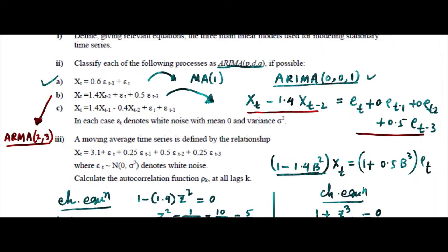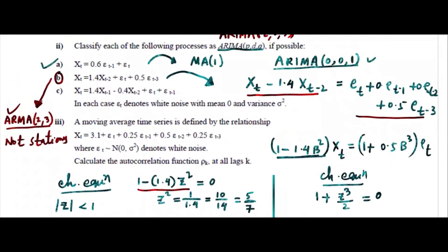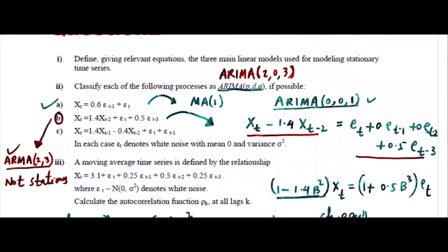My question is: can you write this as ARIMA(2,0,3)? We already checked there is no unit root here, so there is no D component — D is 0. So you can write it as ARIMA(2,0,3), meaning AR2 process, integrated order 0, MA3.